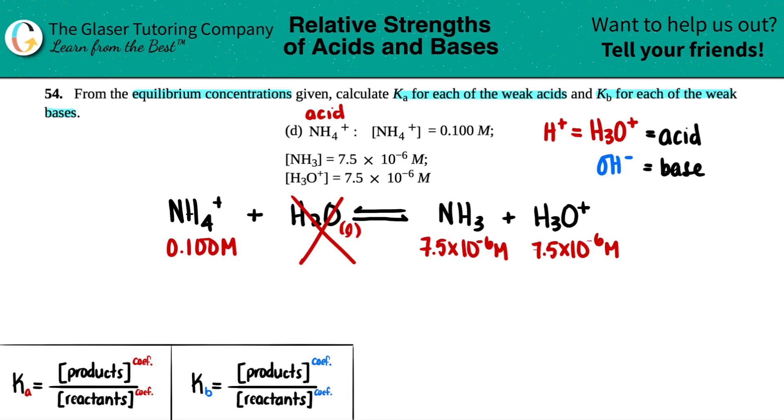Ka or Kb is products divided by reactants. For acids and bases, we don't really care about coefficients because it's generally 1:1:1 when balanced. So Ka equals products divided by reactants. When you have multiple products—in this case NH3 and H3O+—they're multiplied by each other, not added, divided by the one reactant.